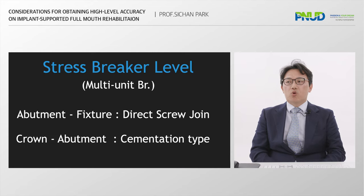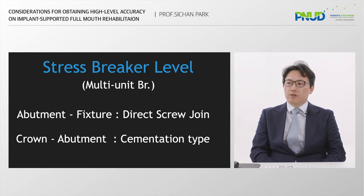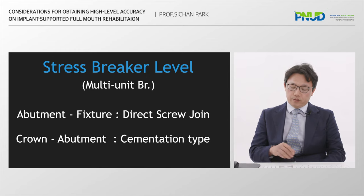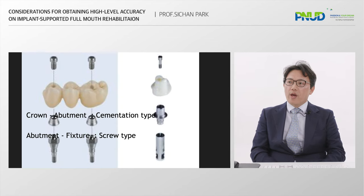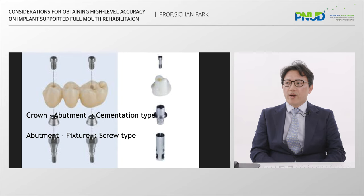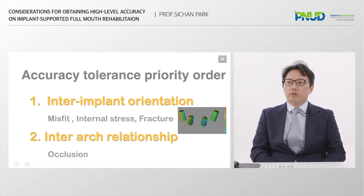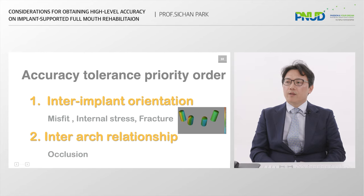We can select a proper strategy according to the expected accuracy level. Direct screw joint type restoration needs a higher level of accuracy. On the other hand, a cement layer can compensate for a little discrepancy and break internal stress. There are two important points in taking impressions: tolerance priority order. The first priority is inter-implant orientation — it usually means direction, translation, and rotation.